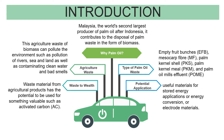Waste to wealth: Waste material from agricultural products has the potential to be used for something valuable, such as activated carbon (AC). Types of palm oil waste include empty fruit bunches (EFB), mesocarp fiber (MF), palm kernel shell (PKS), palm kernel meal (PKM), and palm oil mill effluent, all with potential applications for energy storage, energy conversion, or electrode materials.